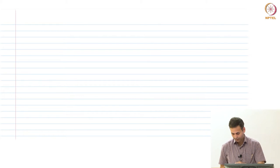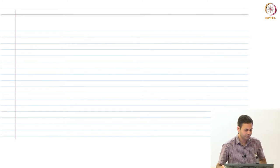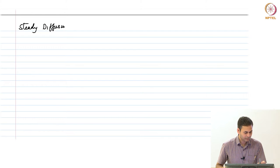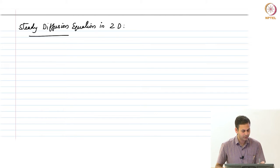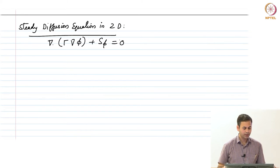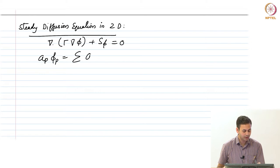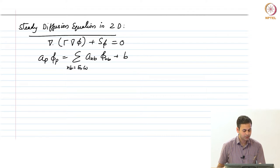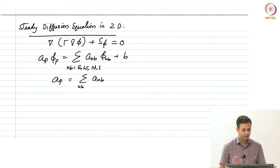Good morning. Let's get started. We looked at the steady diffusion equation in two dimensions yesterday. This was del dot gamma grad phi plus S phi equals 0. We obtained an equation that is basically A_P phi_P equals sigma A_NB phi_NB plus some B, where NB is your east, west, north and south. The central coefficient A_P is again sigma A_NB.